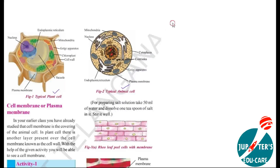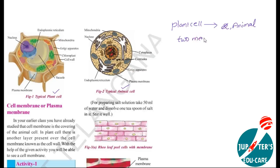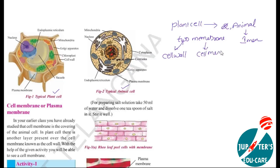As you know, plant cell contains two membranes. The external membrane of the plant cell is called the cell wall, and the internal or inner membrane of the plant cell is called the cell membrane.